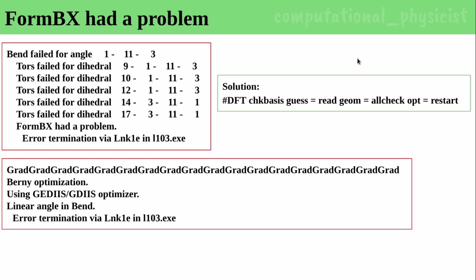The first error I have added here is 'FormBX had a problem.' When this kind of problem arises, you might have seen messages like 'bend felt for angle' or 'tors felt for dihedral.' This kind of problem sometimes appears in Gaussian and is linked to the l103 executable. This executable is related to angle bending and optimization issues during the optimization process.